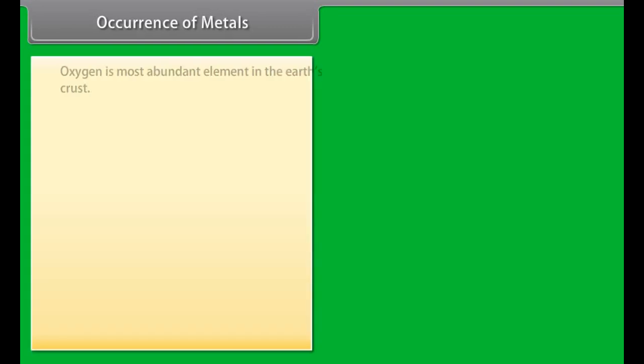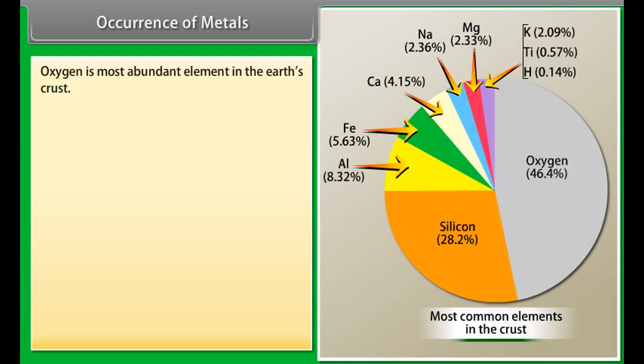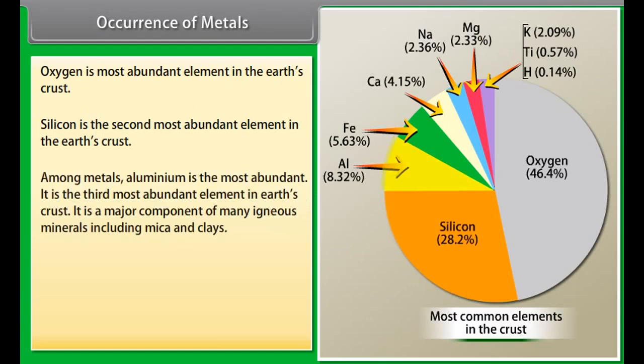Occurrence of metals. Oxygen is most abundant element in the earth's crust. Silicon is the second most abundant element in the earth's crust. Among metals aluminium is the most abundant. It is the third most abundant element in earth's crust.